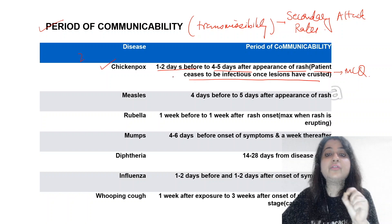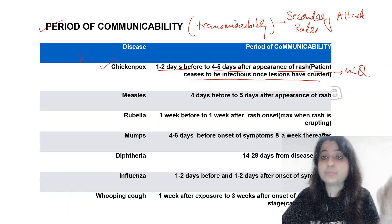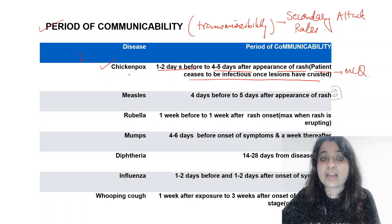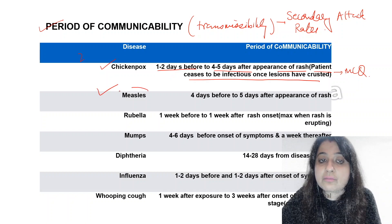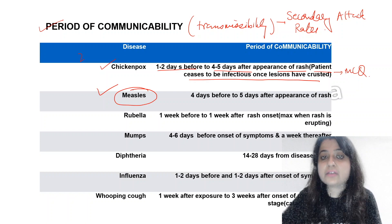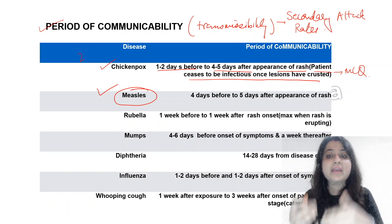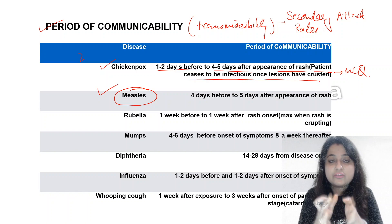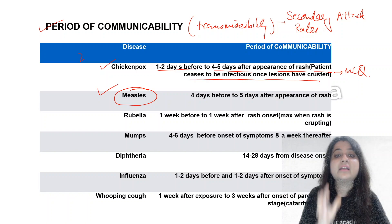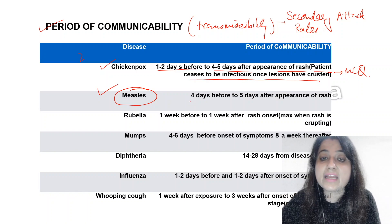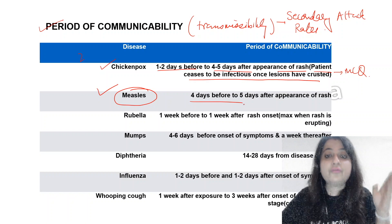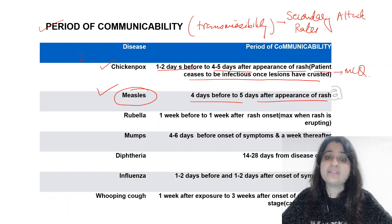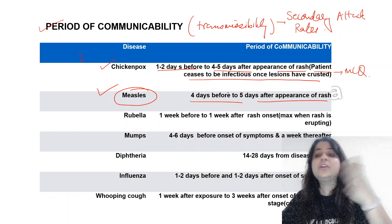So chicken pox: one to two days before to four to five days after appearance of rash. Whenever you study chicken pox, compare it with measles. For measles, the later part is the same, but the starting part is not one to two days — it's four days before. So measles is four to five days before to four to five days after appearance of rash.